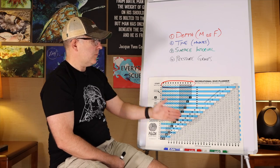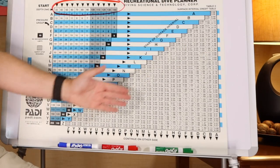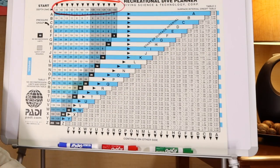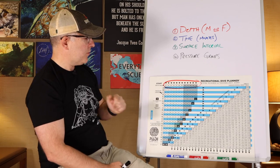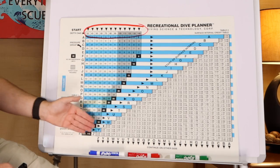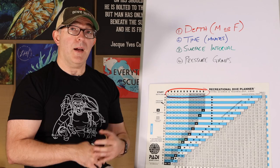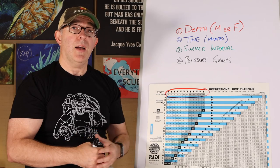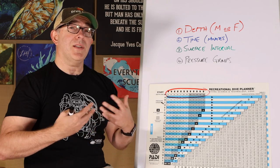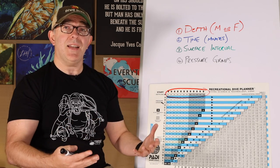Surface interval — we'll find that in table two. All of those numbers correspond to the number of minutes between our dives. Pressure groups: all of these alphabetical letters correspond to a pressure group, and a pressure group is a way for us to classify a diver as to how much nitrogen is remaining in their body after any dive.